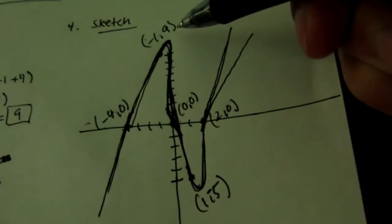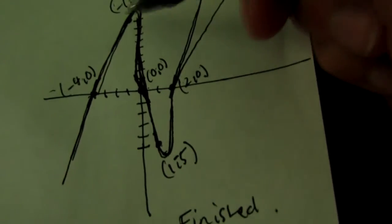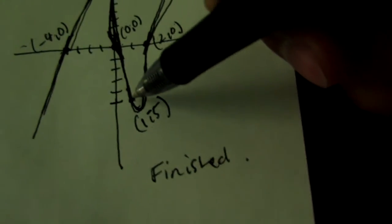But, then we want to plot our between the zeros. So, we pick negative 1, and 9 was our answer. So, we plot that up there. And, we have 1, negative 5. And, we plot 1, negative 5 right there.